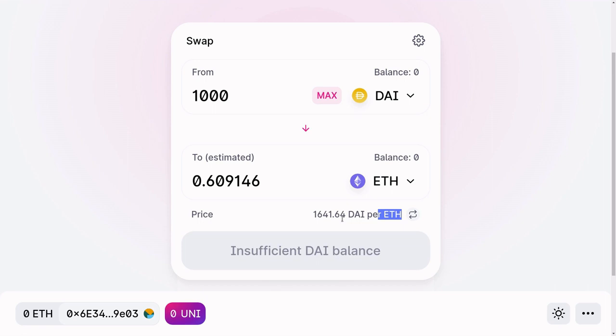for Uniswap, this calculation is all done inside a smart contract. And there is a mathematical formula that calculates this price. So in this video, I'm going to explain how this pricing is calculated.